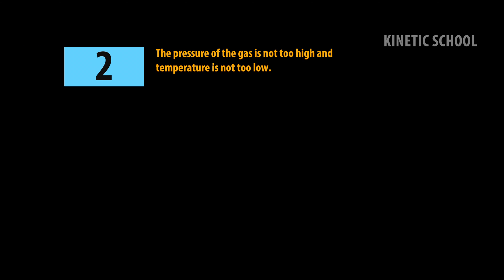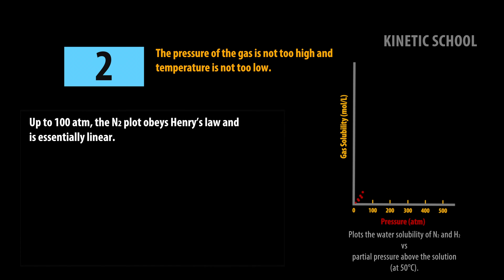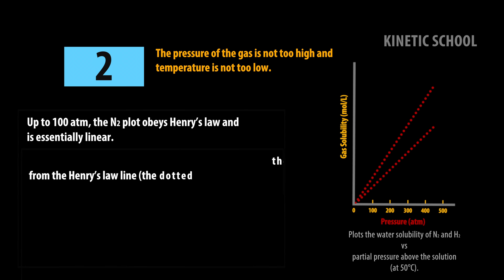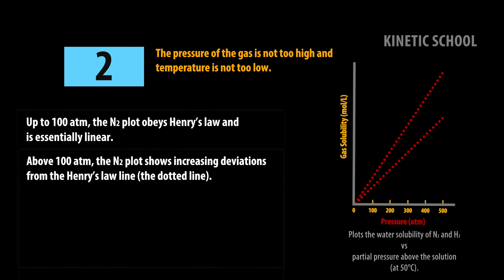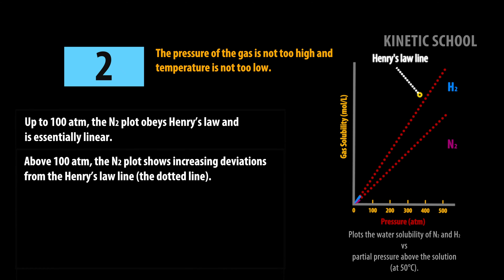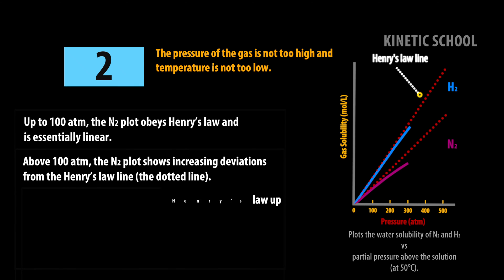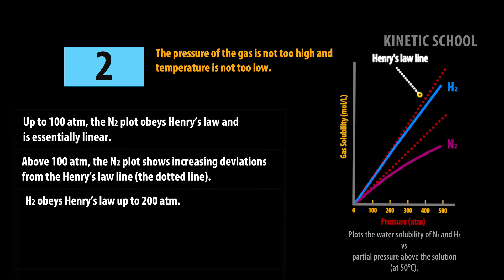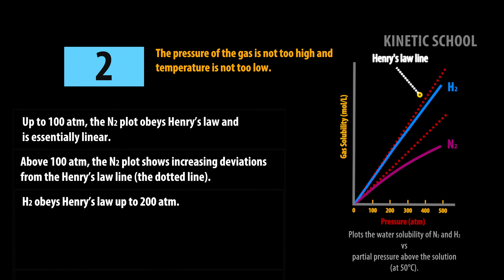Number 2. The pressure of the gas is not too high and temperature is not too low. Up to 100 atm, the nitrogen plot obeys Henry's law and is essentially linear. Above 100 atm, the nitrogen plot shows increasing deviations from the Henry's law line. Hydrogen obeys Henry's law up to 200 atm.